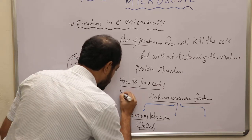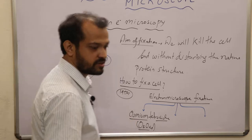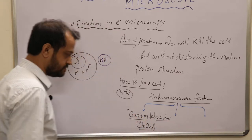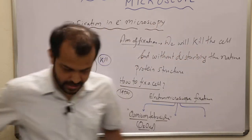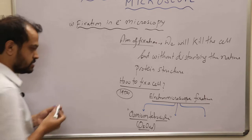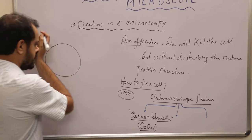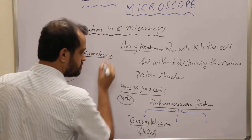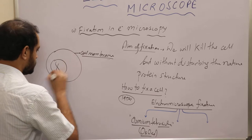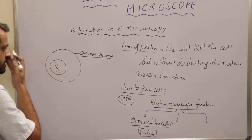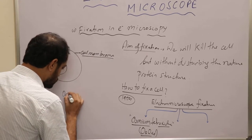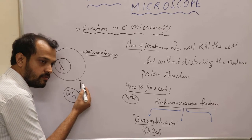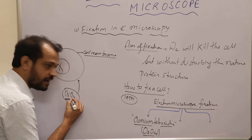Suppose you were a student born in the 1950s — you would have to use osmium tetroxide. What is the importance of osmium tetroxide? This is a cell, and this is the cell membrane. What osmium tetroxide does is it binds with the phospholipid bilayer of the lipid bilayer. Osmium tetroxide actually binds with this phospholipid bilayer.